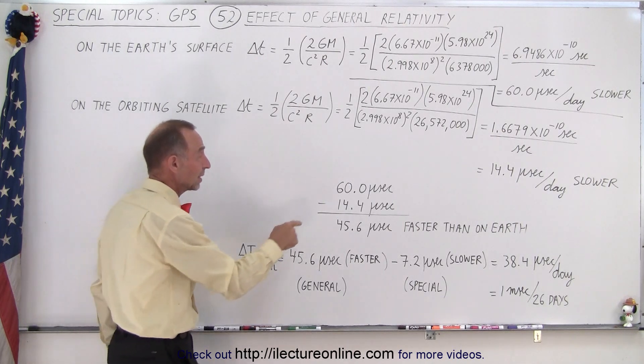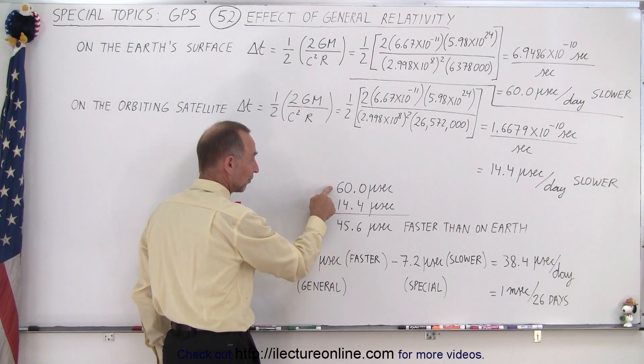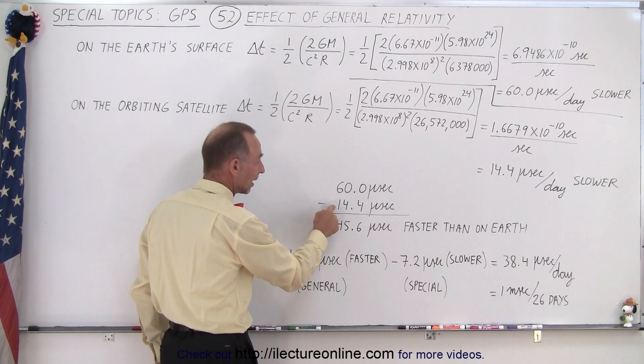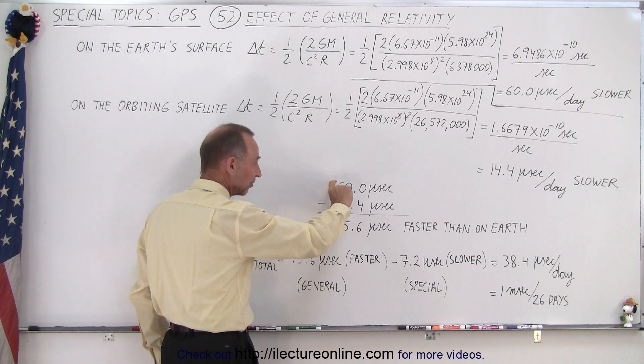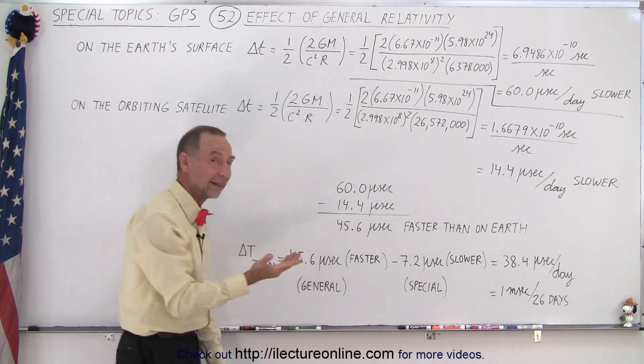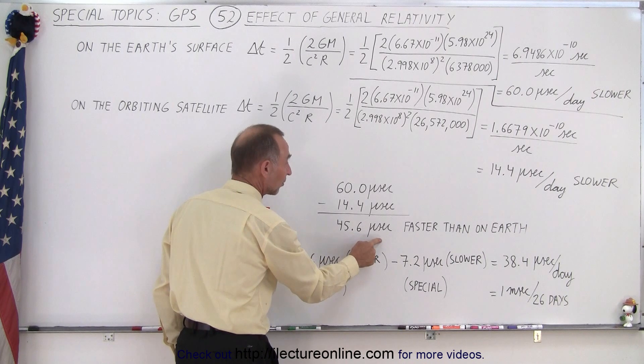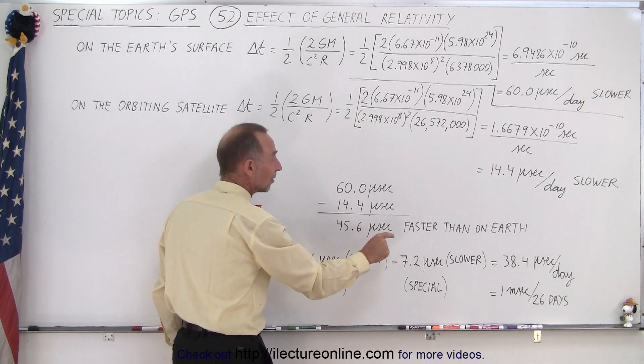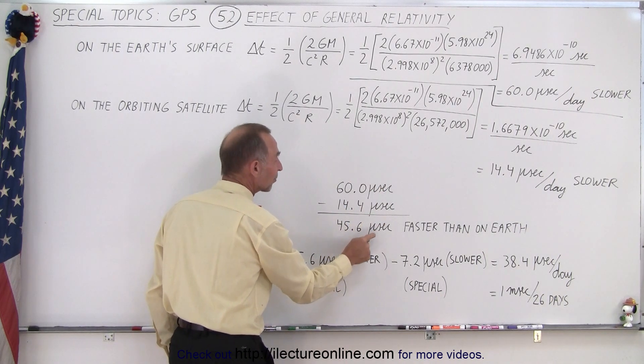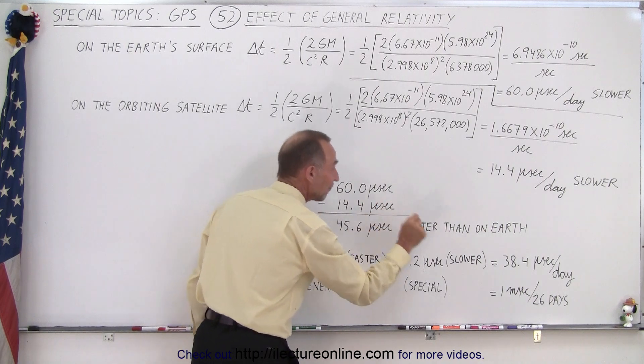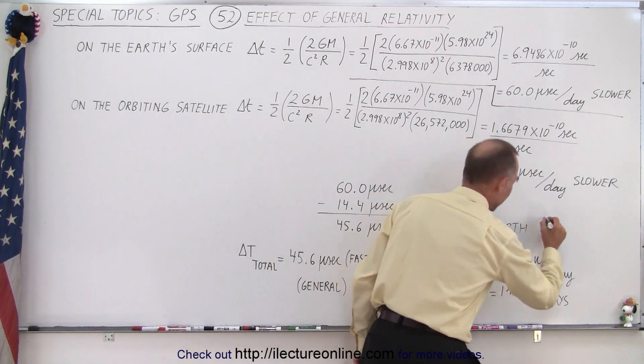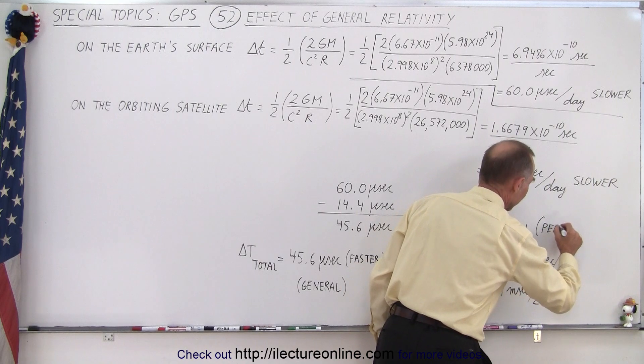So what we need to do is we need to take the time dilation on the surface of the Earth minus the time dilation on the satellite. That gives us the difference in the time dilation between the satellite and the Earth's surface which is 45.6 microseconds, which means on the satellites the time runs 45.6 microseconds per day faster than on Earth.